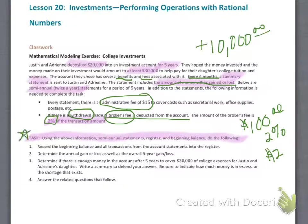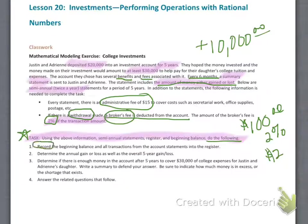Your task is: using the above information, the semi-annual statements on the next page, the register on the page after that, and the beginning balance of $20,000, you are to do the following: record the beginning balance and all transactions from the account statements into the register. You are also going to determine the annual gain or loss as well as the overall five-year gain or loss. I'll step you through this. Sometimes you do lose money because of the performance of the stock market.